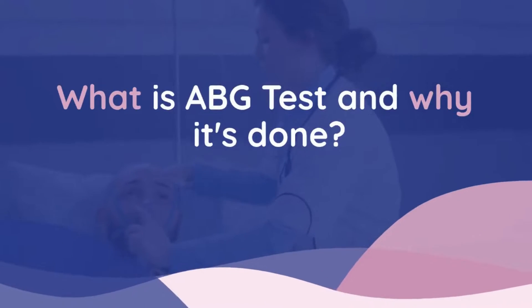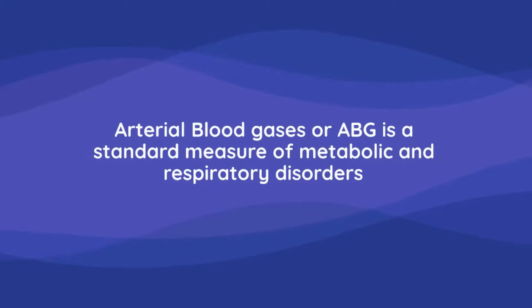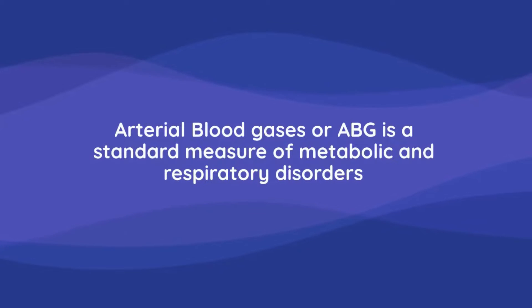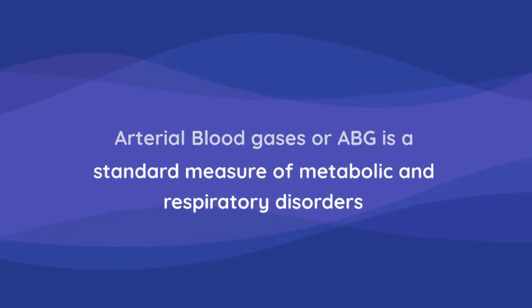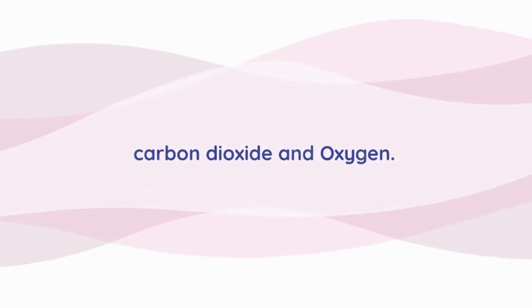What is ABG and why it's done? Arterial blood gases, or ABG, is a standard measure of metabolic and respiratory disorders, as it gives clues about the gases in the blood such as carbon dioxide and oxygen.